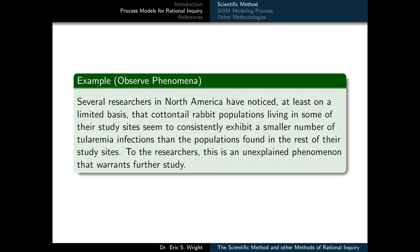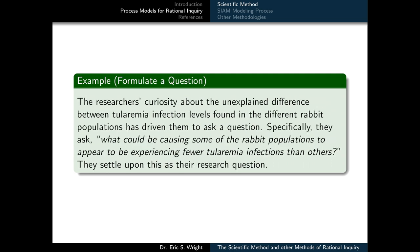I'm going to illustrate the scientific method, or at least its individual stages, by example. Here's what observing a phenomenon might look like. Imagine several researchers in North America who have noticed, at least on a limited basis, that cottontail rabbit populations living in some of their study sites seem to consistently exhibit smaller numbers of tularemia infections than the populations found in the rest of their study sites. A question our imaginary researchers might formulate is: what could be causing some of the rabbit populations to appear to be experiencing fewer tularemia infections than others?